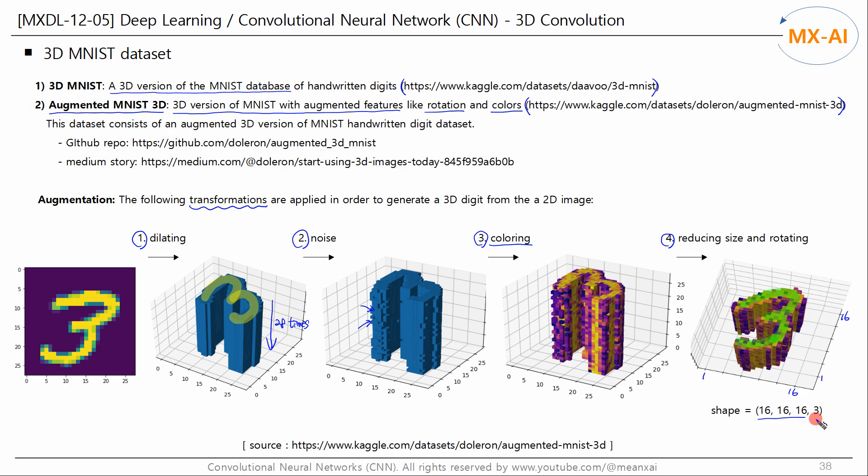A single image has a four-dimensional structure like this, including color channels.